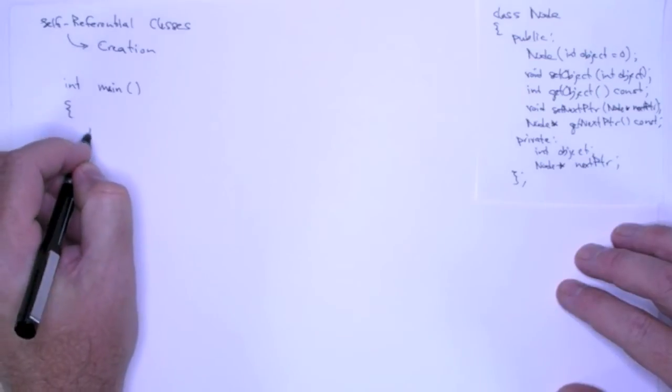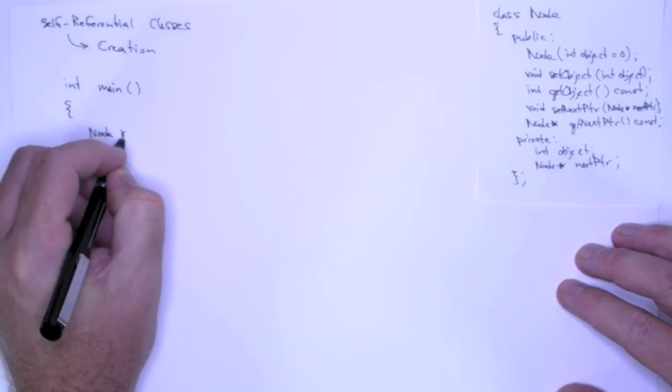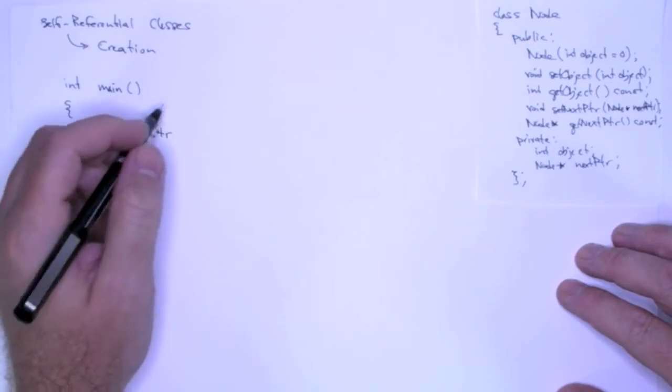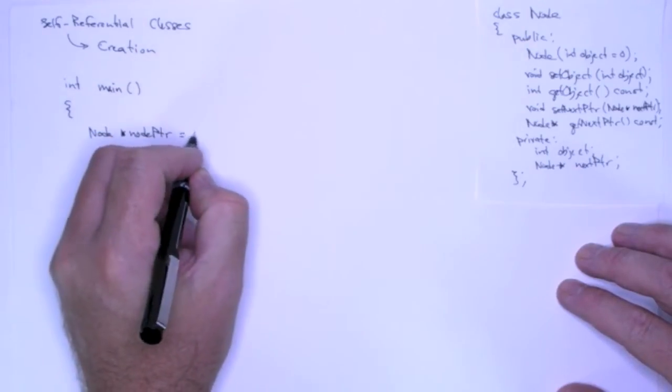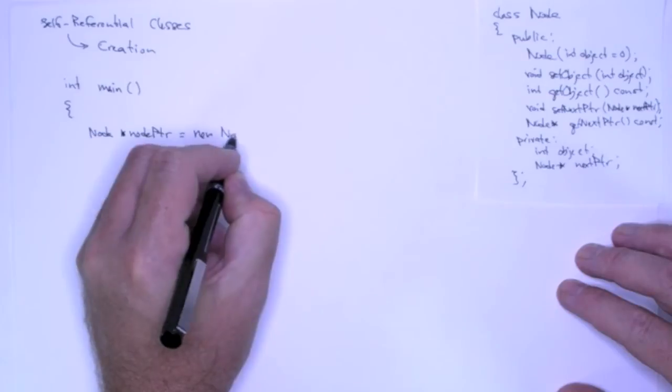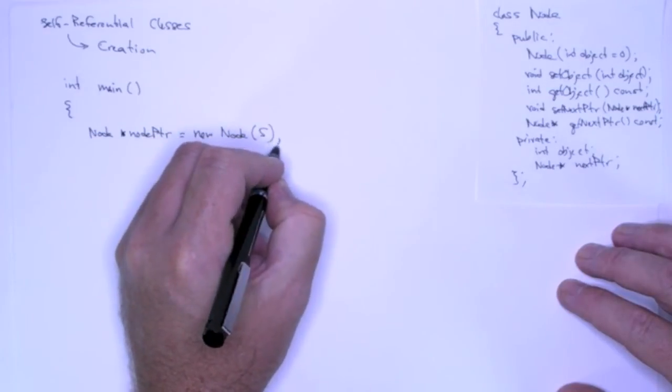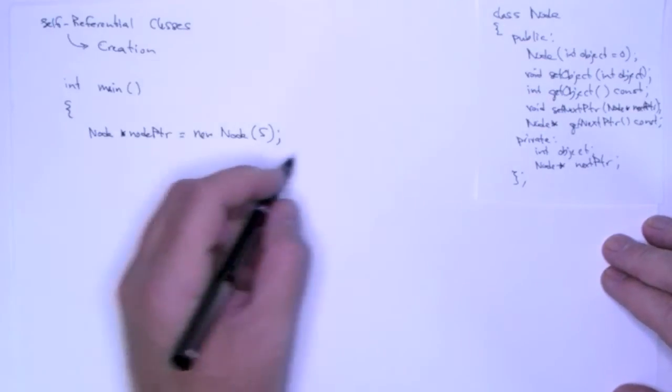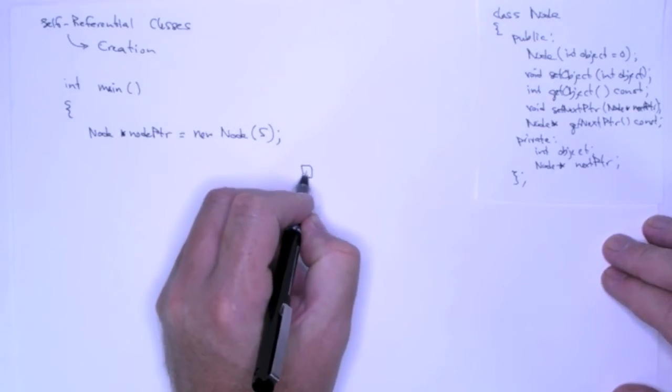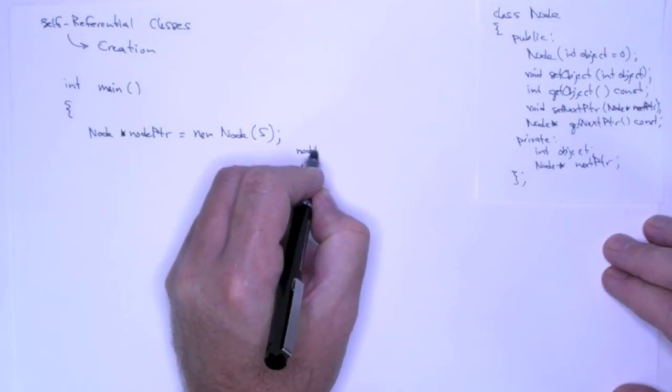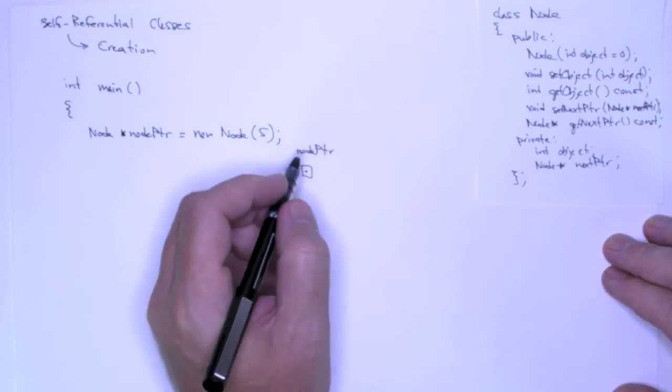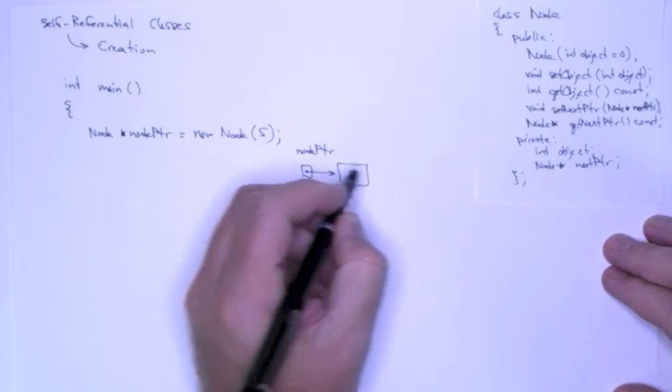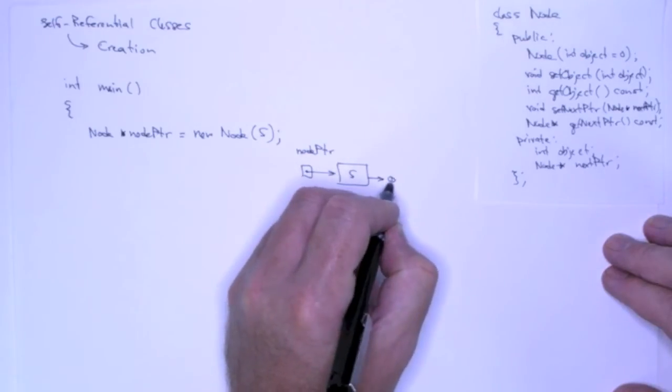Okay, so I'm going to declare node pointer, and I'm going to make it point to a new dynamically allocated node object containing five. So that is going to give us the picture, here's node pointer, and then we have five, and of course this points to null.